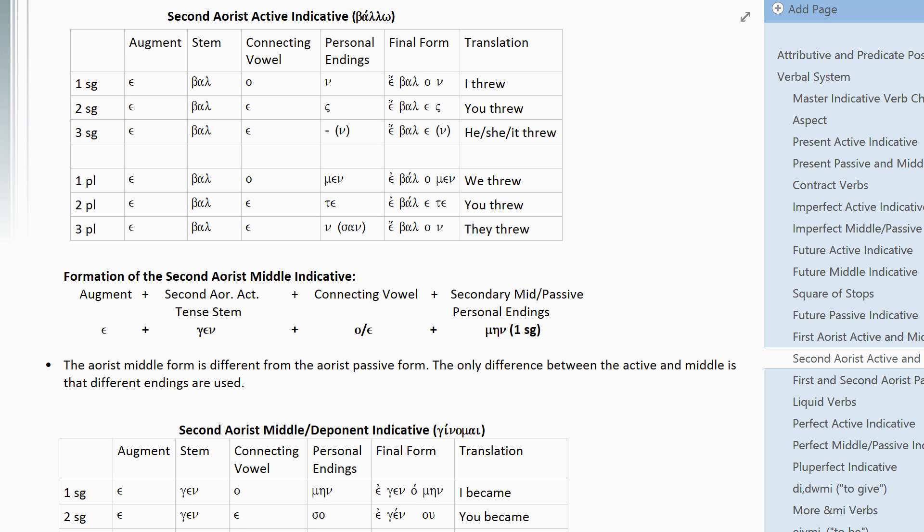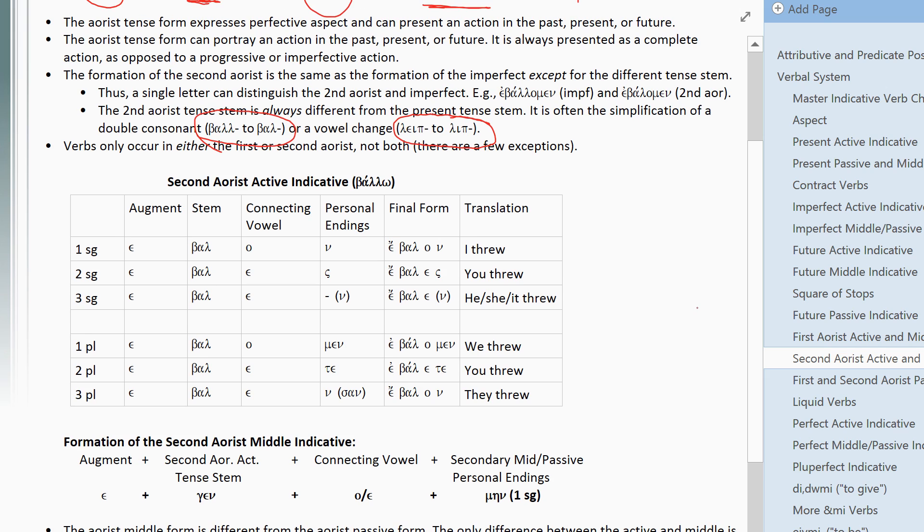Now, the last thing to note is, well, let me say that if you had something like lip, it would be the same thing. Elipon, et cetera. So, just take that stem and insert it where bal is and you'll get the same result.